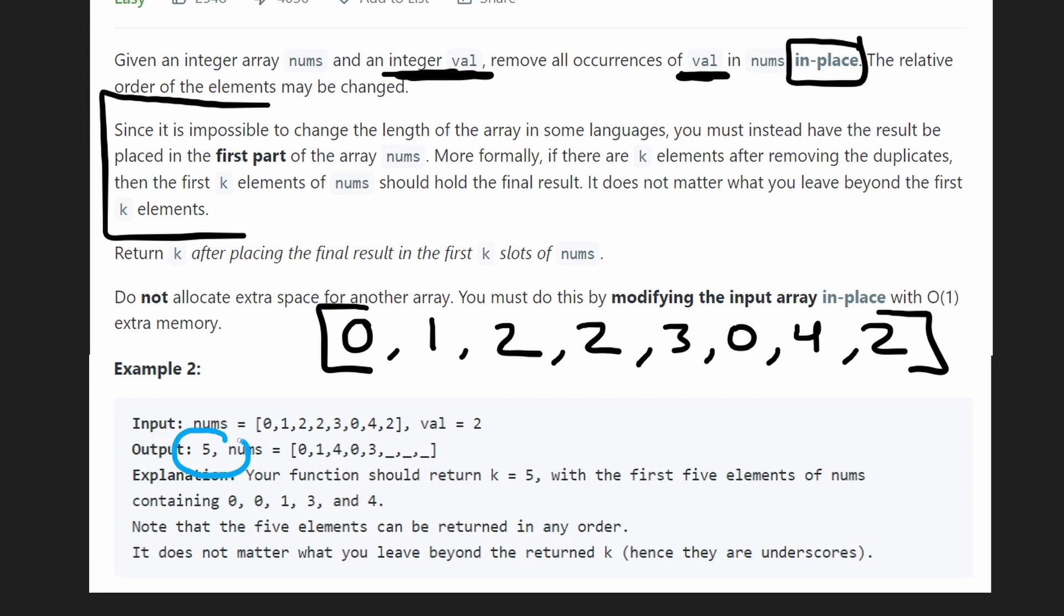We're just returning five, indicating that there's five values in the array that are not two. And like I said, the trick to doing this is doing it in place without allocating any extra memory. So returning the value itself, five, would be easy in this case. It's easy to count which values are not two, but doing the actual in-place modification is tricky if you're a beginner. So let me explain it.